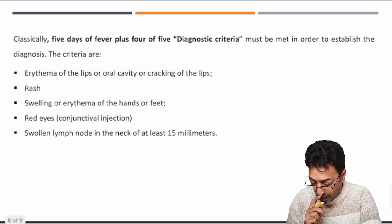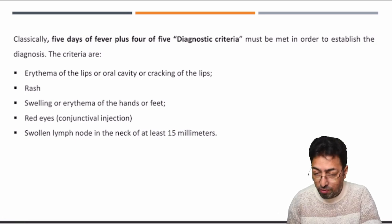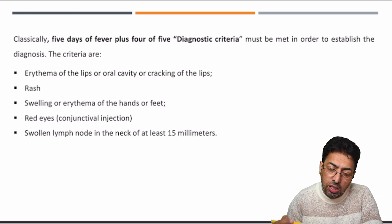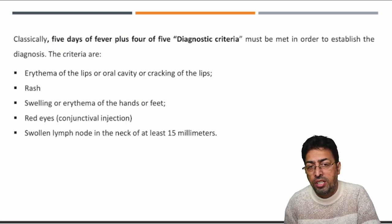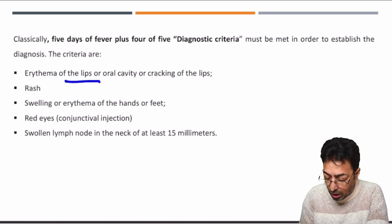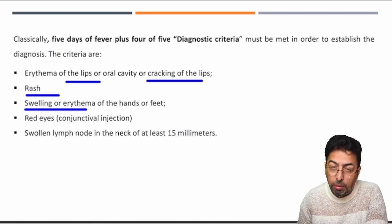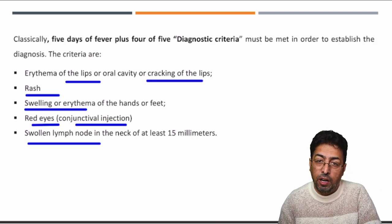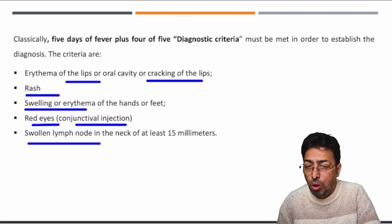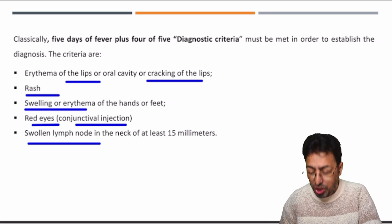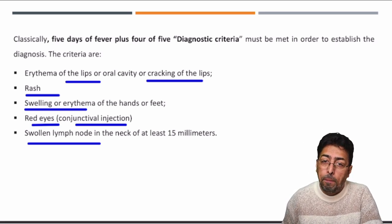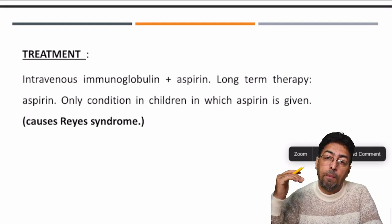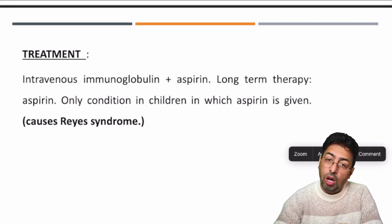Kawasaki's disease is also associated with chronic fever — important to note. Sometimes the criteria are asked in examinations. The important features to remember are: erythema or cracking of the lips, rash, swelling and erythema of the hands and feet, red eyes (conjunctival injection), and cervical lymphadenopathy. All these features may not be present simultaneously. This makes it easy for a well-trained pediatrician to pick up the diagnosis.